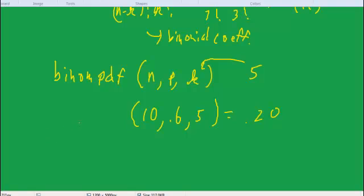And now what about our second question? If we want to get up to and including 5, we could calculate binom PDF for 5, and then 4, 3, 2, 1, 0, and add them all up...